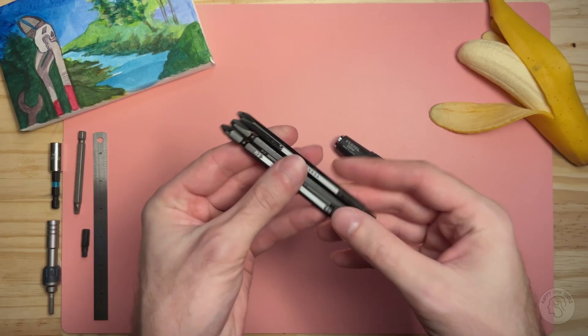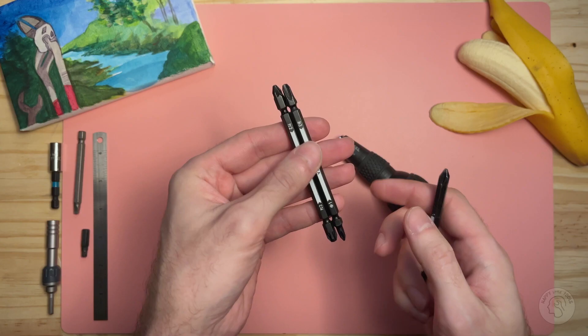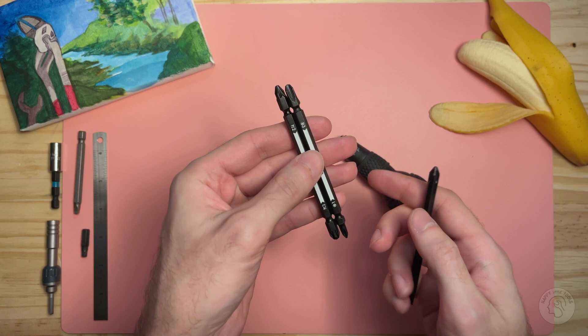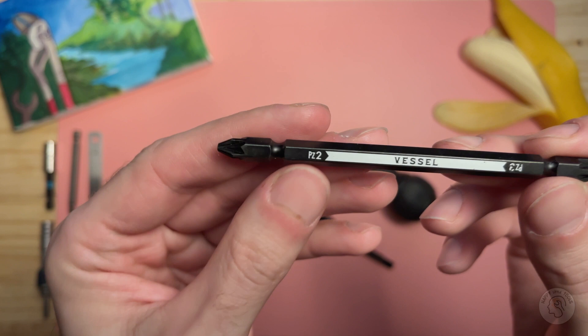So let's talk about the three bits that come with this. It comes with three double ended bits. Two of them I have never used at all. You have the most useless one for most people - it comes with Pozidrive or Posidriv PZ2 and PZ3.